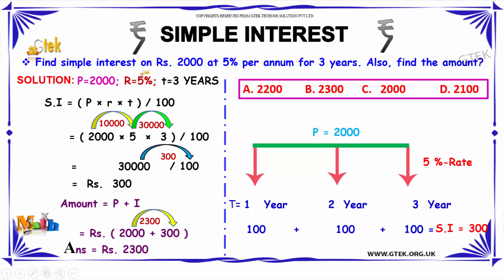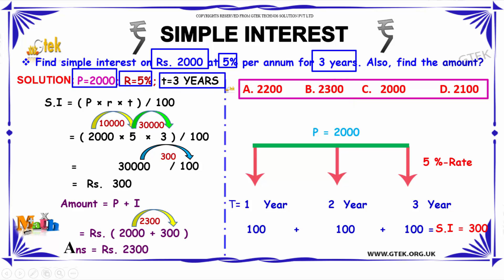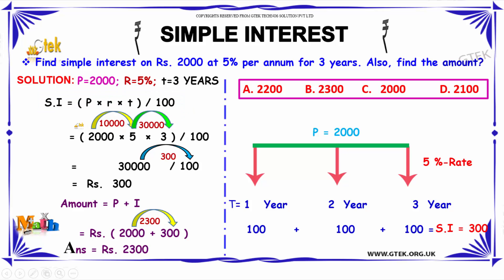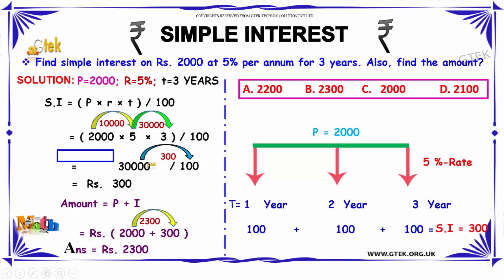From the given question, the principal amount P = ₹2000, the rate of interest R = 5%, and the time T = 3 years. Substituting the known values in the simple interest formula SI = P × R × T / 100, we get 2000 × 5 × 3 / 100, which gives 30000 / 100 = 300.